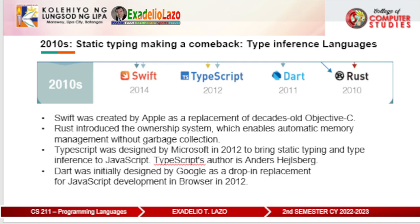Rust's ownership system is a major breakthrough in memory management, since garbage collection had been the dominant approach. It also borrowed functional programming concepts like pattern matching and immutable data. Rust thus became a contender to C++ for system programming and real-time software development. TypeScript was designed by Microsoft in 2012 to bring static typing and type inference to JavaScript. TypeScript's author Anders Hejlsberg played a major role in developing C#, Delphi, and Object Pascal. TypeScript was designed to be a strict superset of JavaScript, meaning any JavaScript code is fully compatible with TypeScript — enabling developers to adopt TypeScript gradually in their existing JavaScript applications.